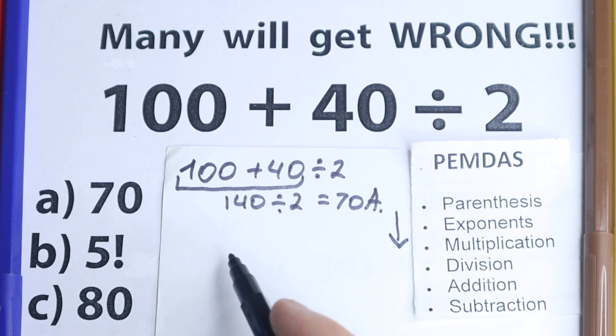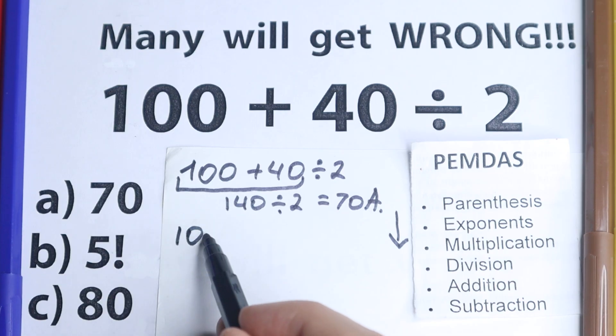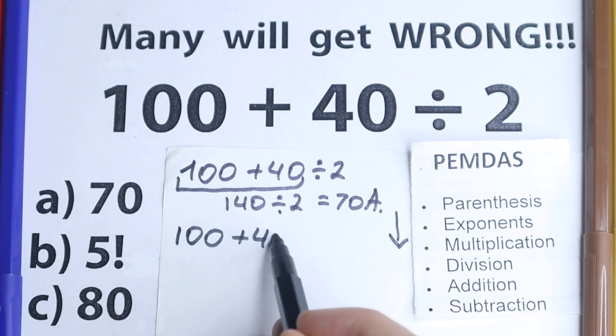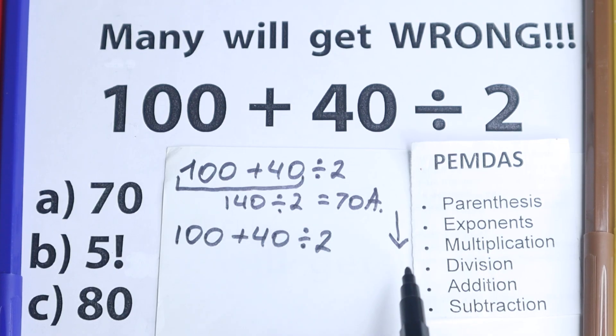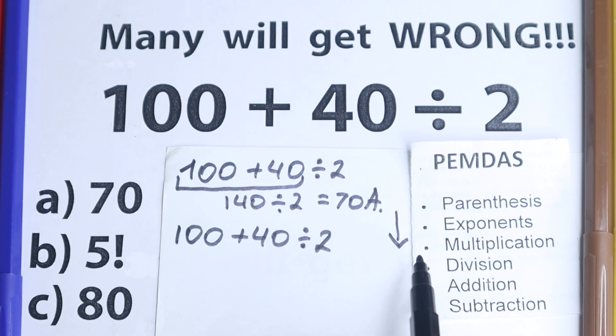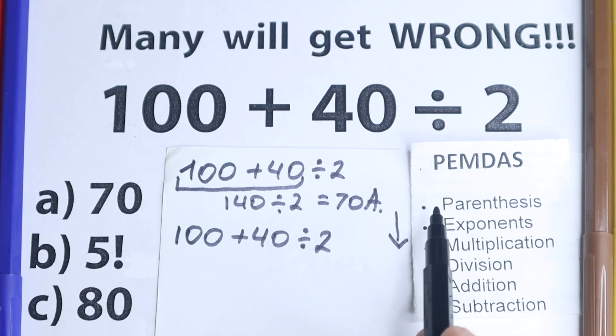Because a lot of students, when they solve it in an obvious way, they say option A is the correct answer. But let's look at this PEMDAS order of operations. PEMDAS works from the top to the bottom. If I rewrite this question right here, 100 plus 40 divided by 2, let's look according to the correct order of operations.